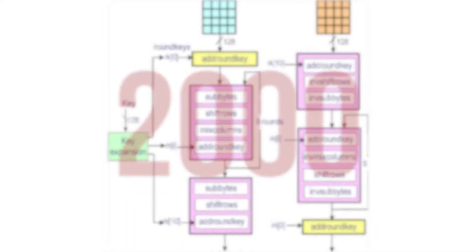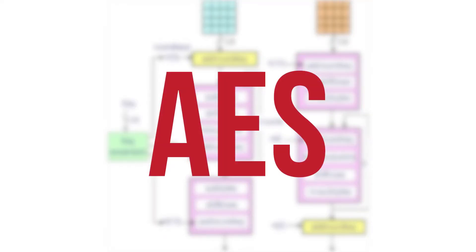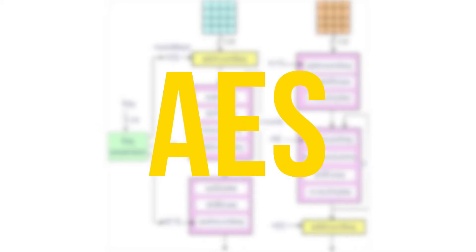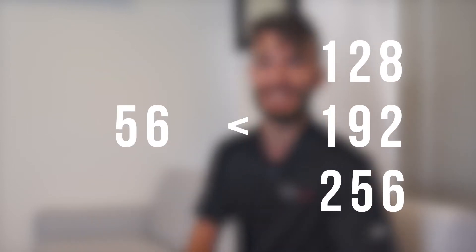In 2000, the Advanced Encryption Standard or AES superseded DES as the de facto encryption method and is currently considered the gold standard for encryption and approved for use in classified US government information. AES offers 128, 192, and 256-bit encryption versus the 56-bit encryption in use by DES. And here at DataLocker, we use a version of AES in all of our encryption products.